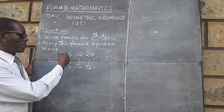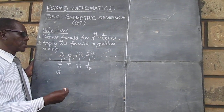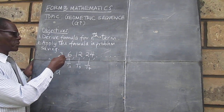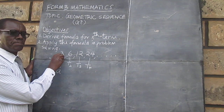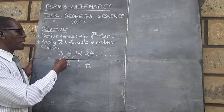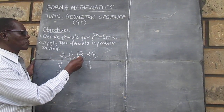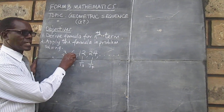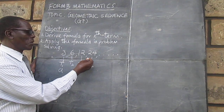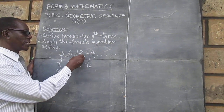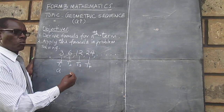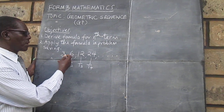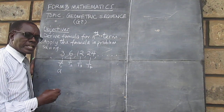What is unique about a GP is that if we take the second term and divide by the first term, we get the same as when we divide the third term by the second, and so on. If we take the fourth term, what we are getting is a constant ratio.